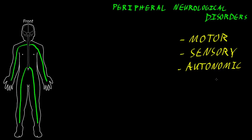The symptom of pain in particular is a common sensory abnormality that can occur with peripheral neurological disorders. If somatosensory axons — those carrying sensory information from the body, including the sense of pain — are affected, that's a common sensory abnormality that may occur with lesions of somatosensory axons in nerves.